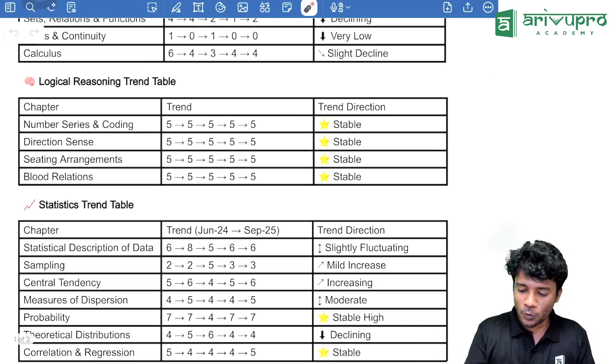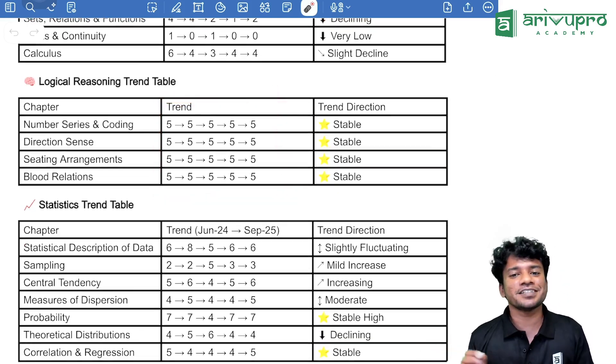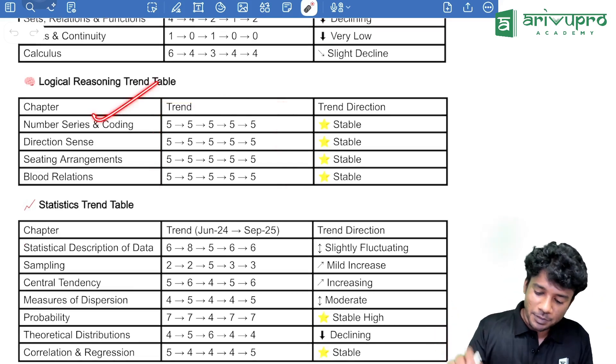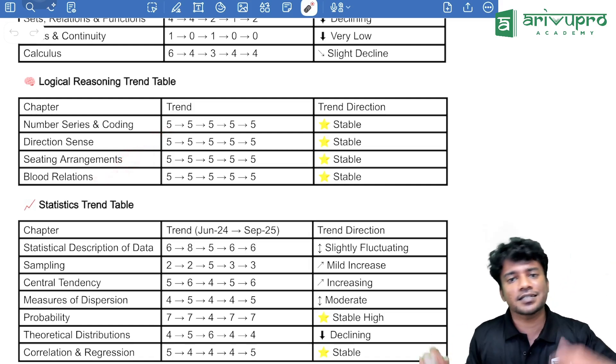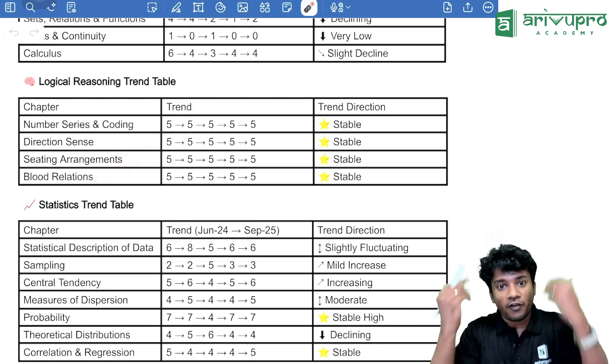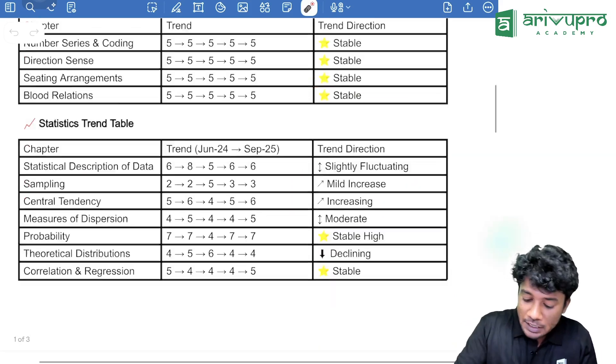One thing is always certain, in all the last 5 attempts, that means, per chapter, that means number series, direction test, then seating arrangement, then blood relation, every chapter was giving 5 marks each. So, which was very stable.